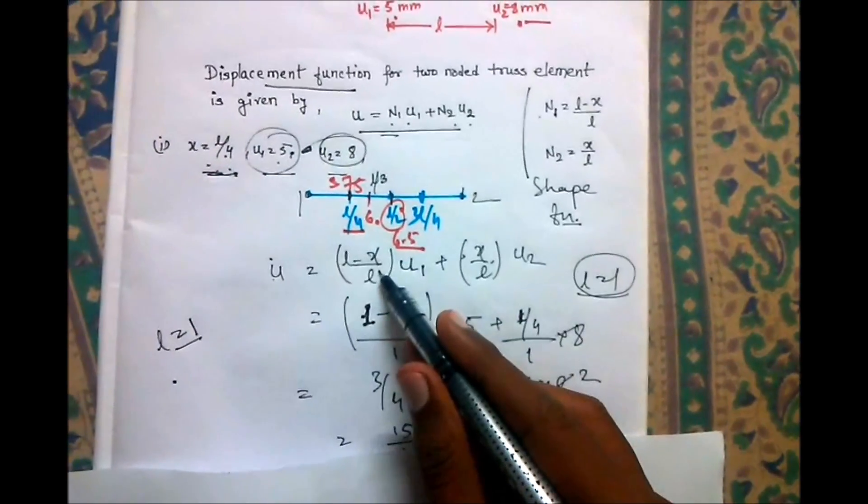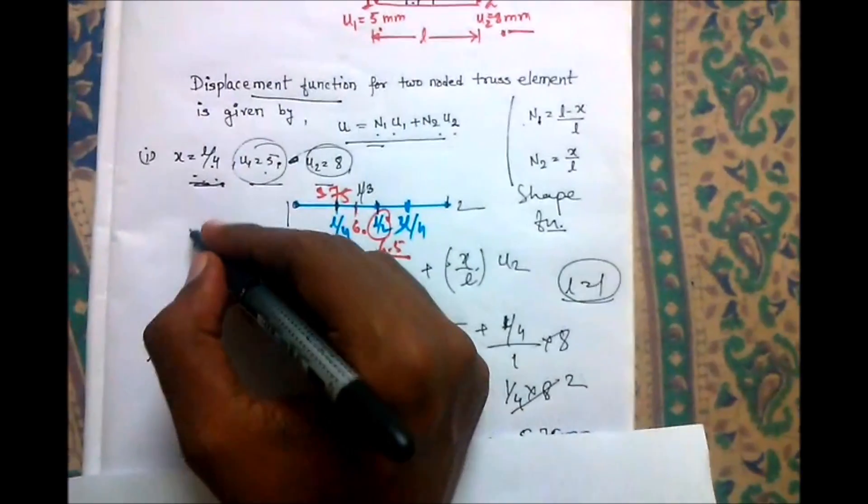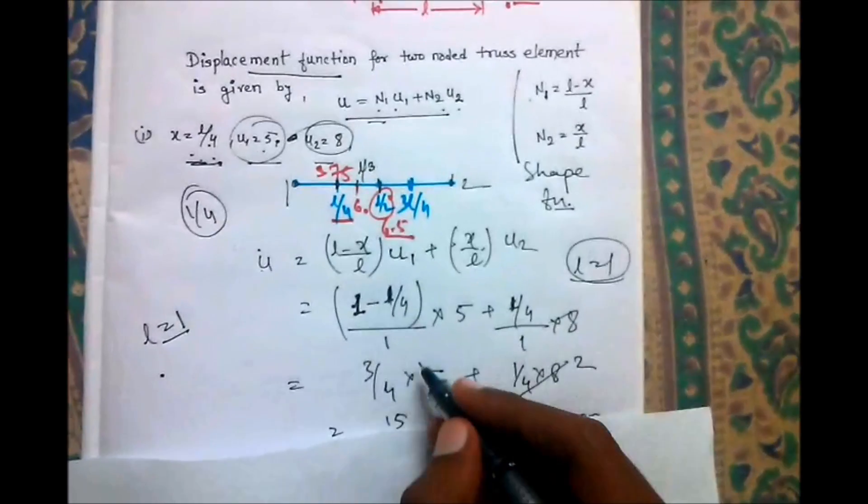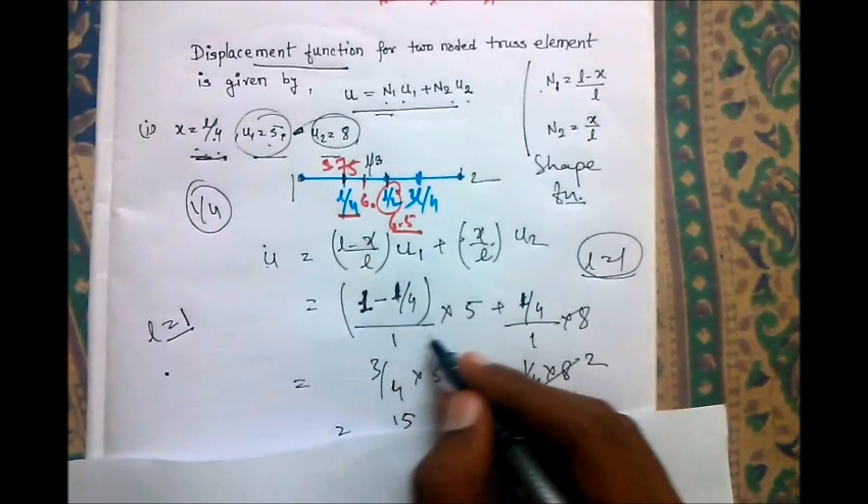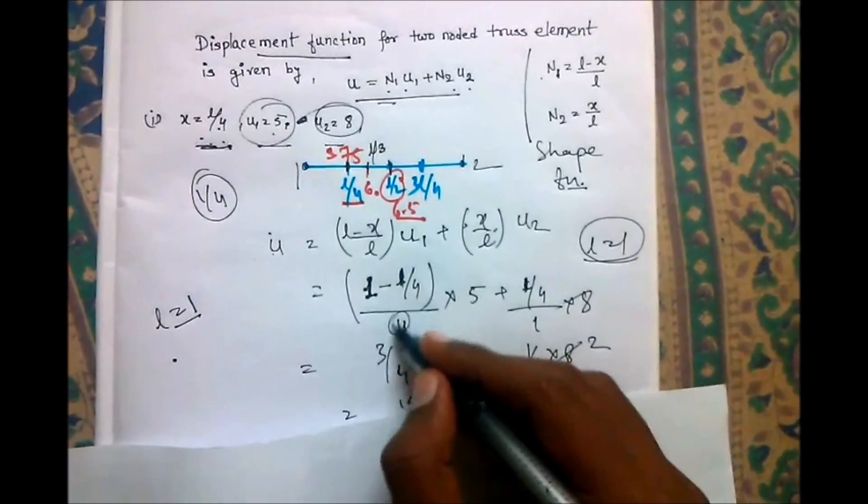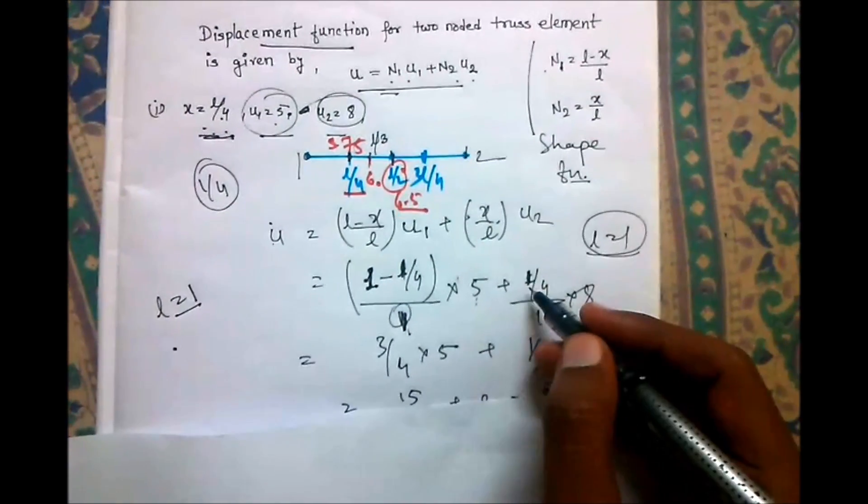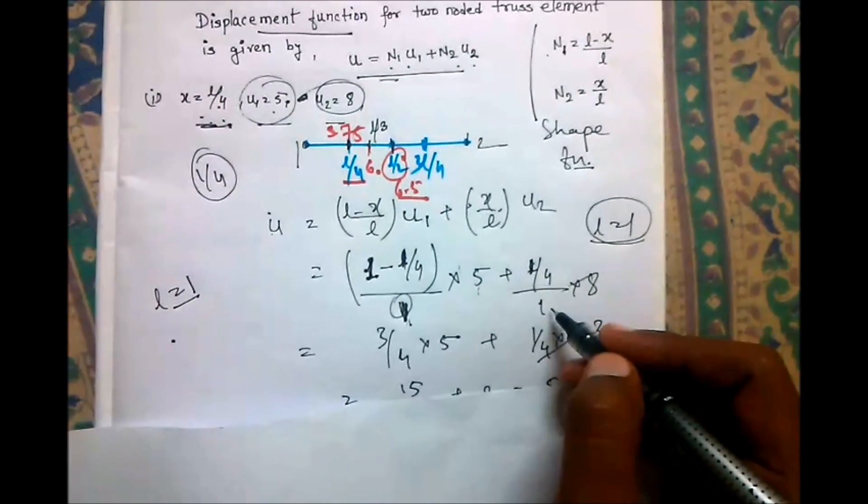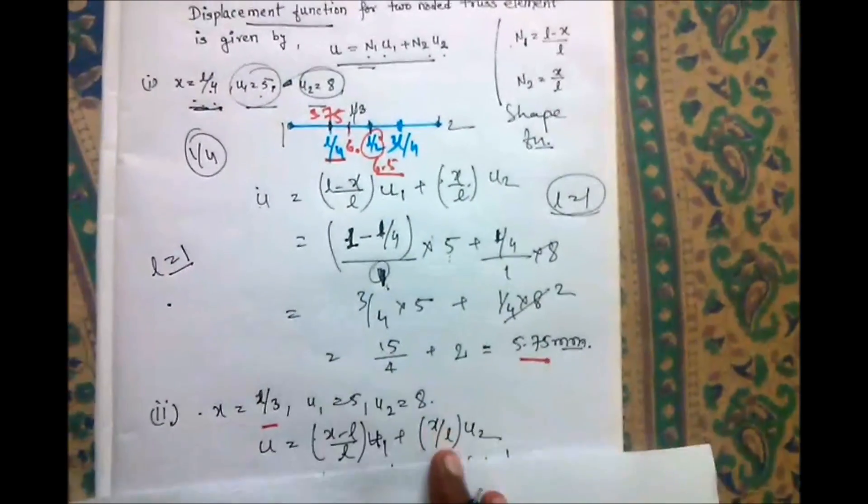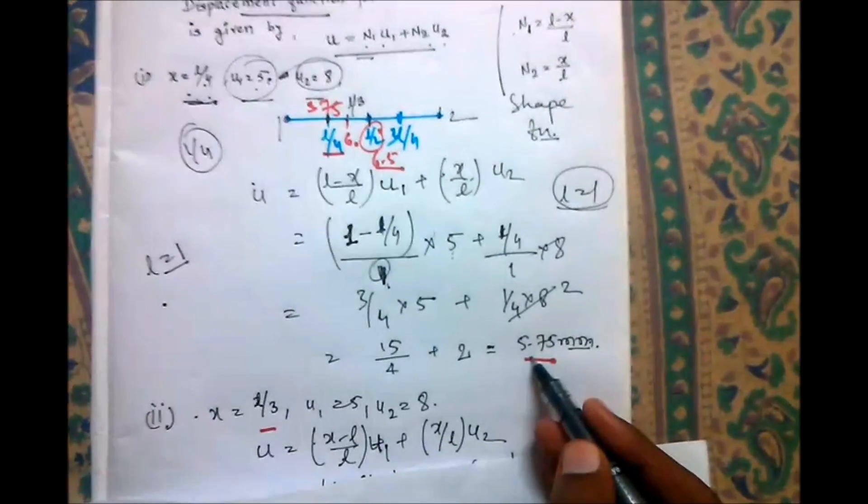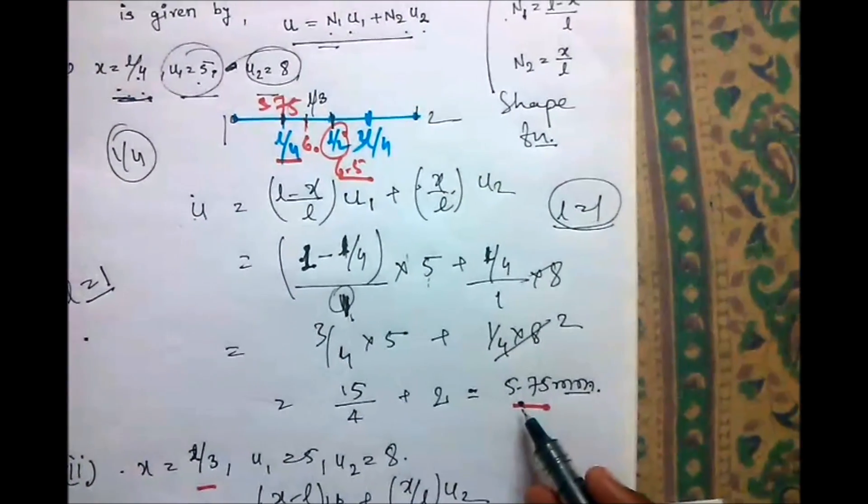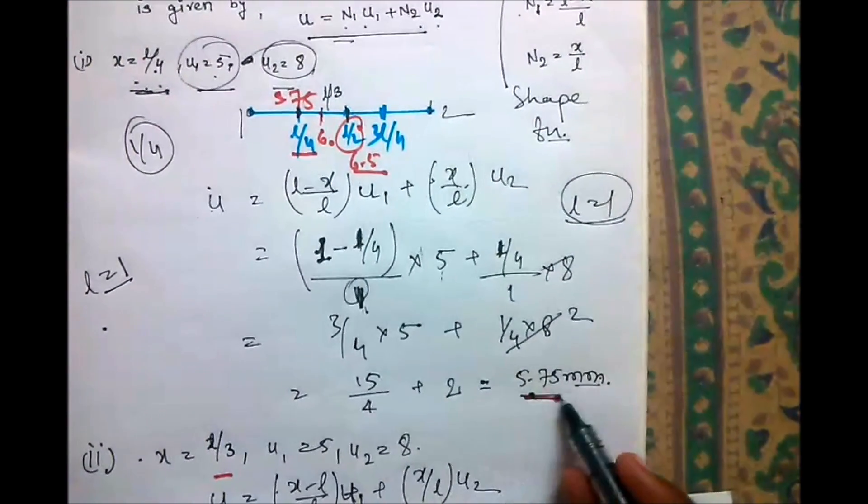So, 1 minus x equals 1/4. So (1 - 1/4)/1 times 5, which is u₁, plus (1/4)/1 times 8. This will give you the value. The nodal displacement at x = l/4 is 5.75mm.